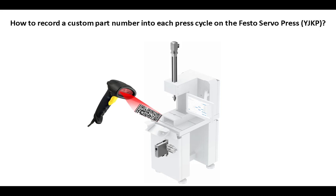Recently, I had a question from a customer asking how they could record a custom part number into each press cycle on the Festo servo press. They have different part numbers flowing through a conveyor, scan each part number, acquire a string of characters from that part, and want to store that string along with the press cycle. There's a logging functionality on the servo press, so the approach I'm suggesting is using the variables.